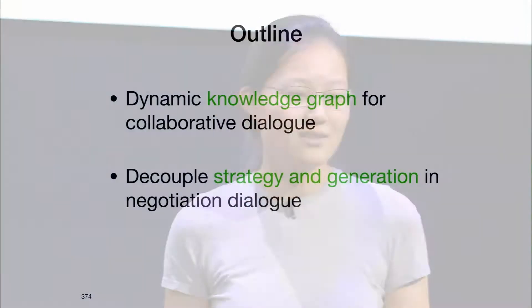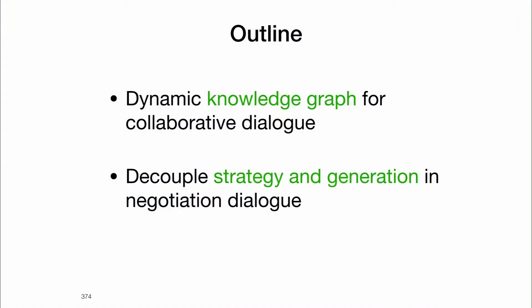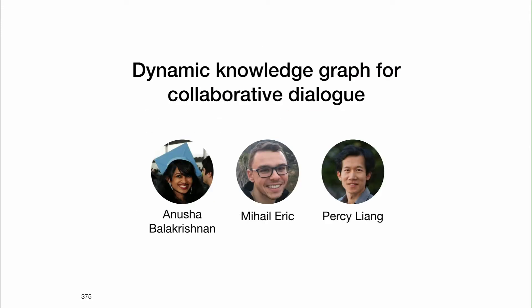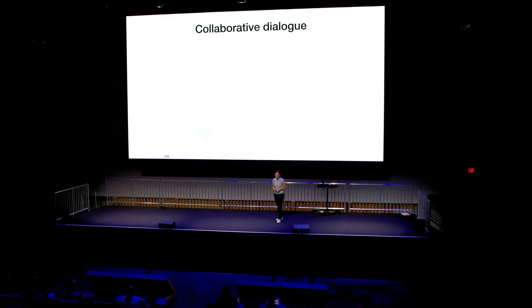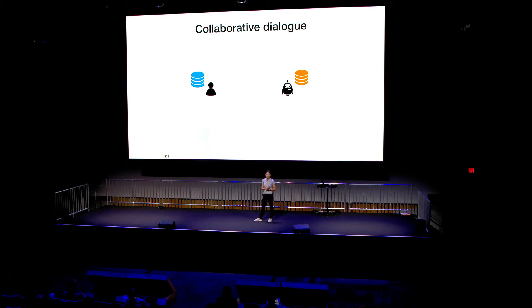I will talk about two recent works along these lines. The first is how we can do simple reasoning over knowledge graphs in collaborative dialogue tasks. The second is how we can handle both strategy learning and open-ended generation in negotiation dialogue. The first is joint work with Anusha, who has just talked, and Mikhail and Percy at Stanford. So here is the collaborative dialogue setting — we have two agents, each of them with some private knowledge.